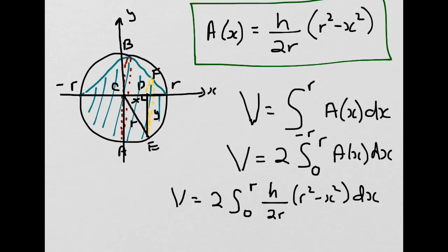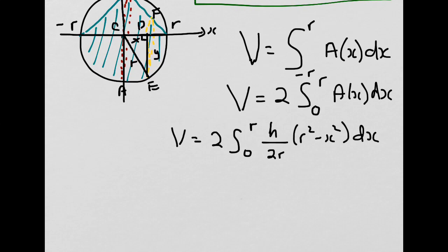Now, h over 2r is a constant which I am multiplying, so I can bring it outside the integral. If I do that, I get V equals 2 times h over 2r, integral from 0 to r of (r² - x²) dx.